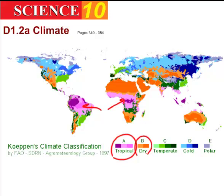The orangey colors are dry deserts, and so we see most of Australia is a desert. We have deserts in North Africa, South Africa, of course in the Arabian Peninsula, and we have a desert in the southwest United States.